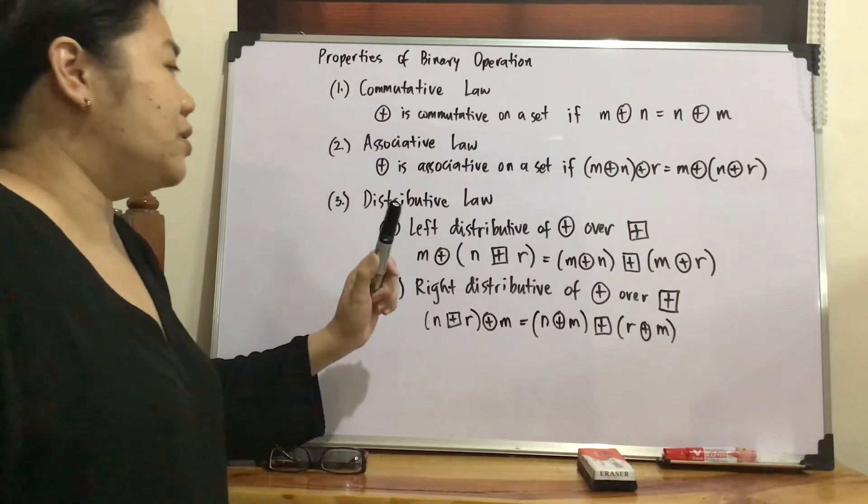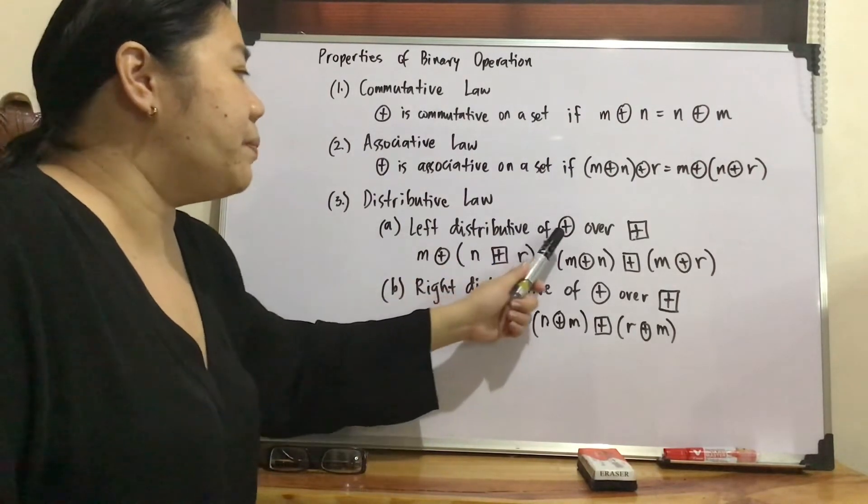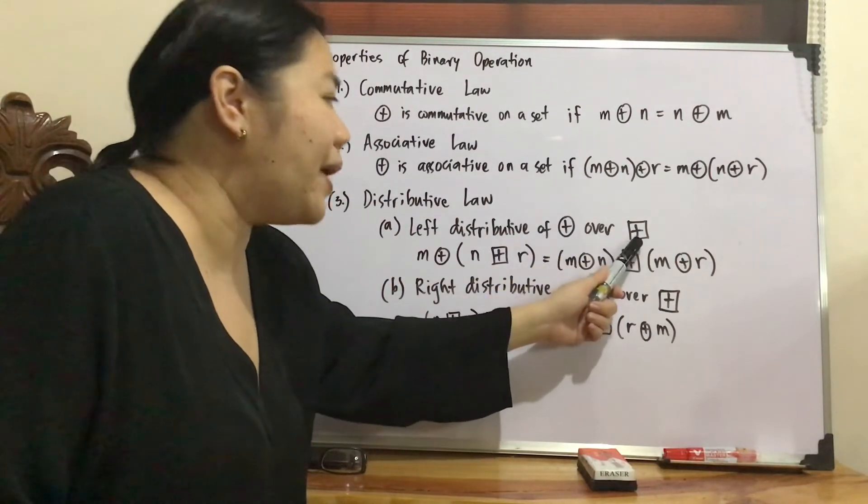So third, distributive law. So we have two: left distributive of plus circle over plus square.